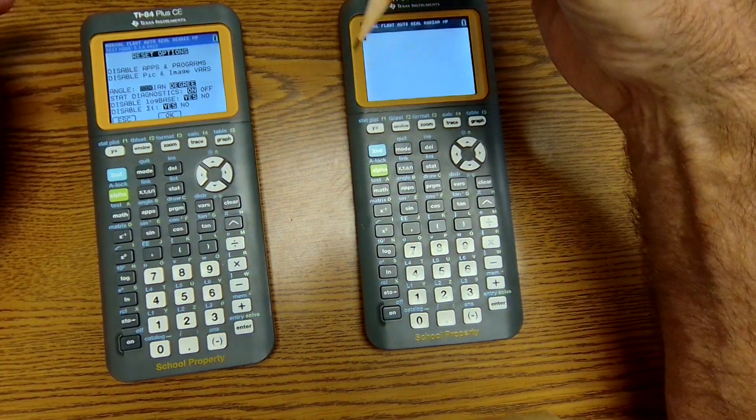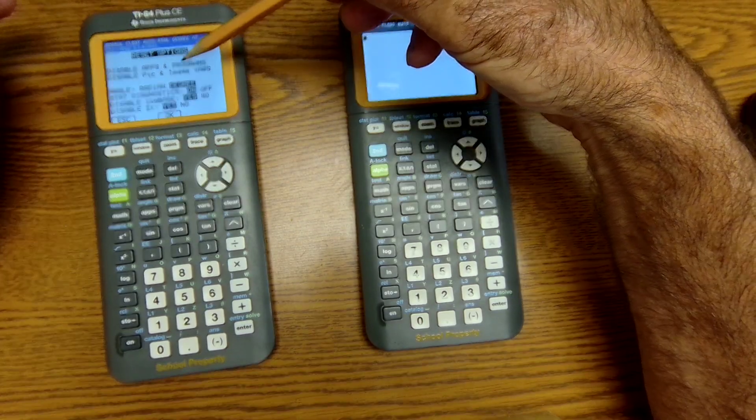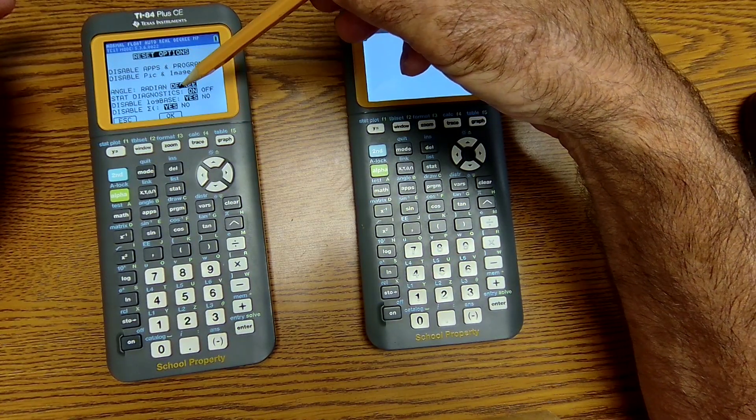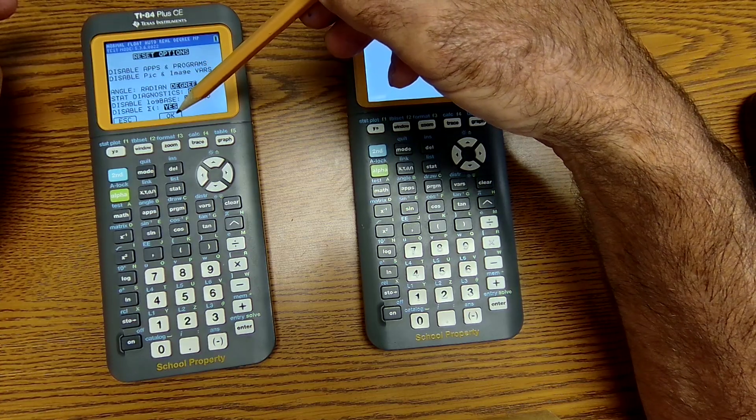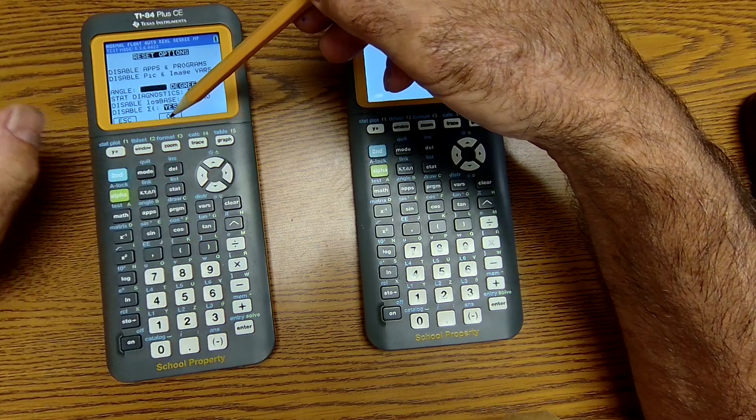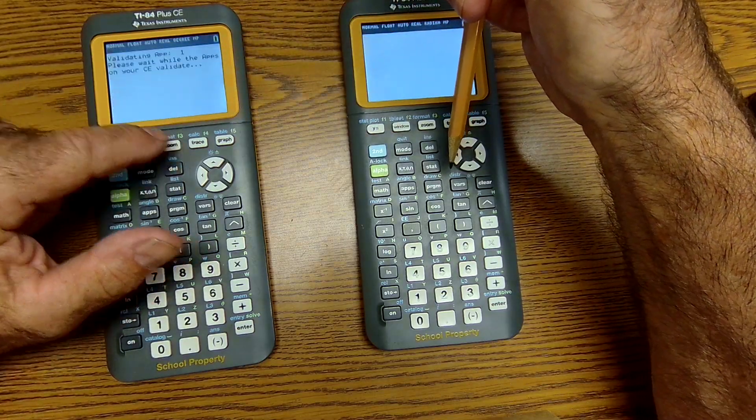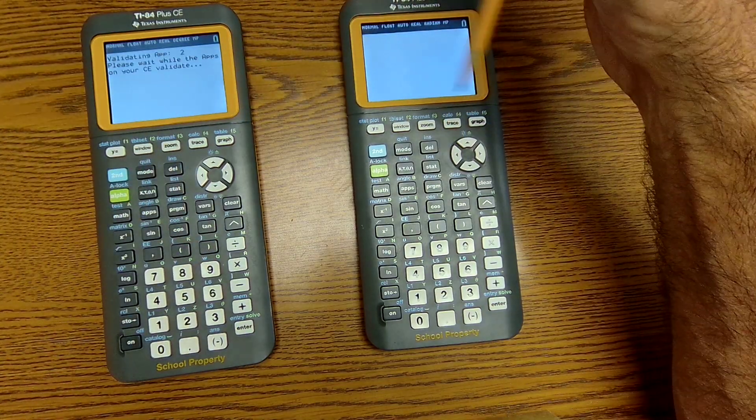And now it's asking me, what options do you want in test mode? You could select radians or degrees, diagnostics on or off, and so forth. You scroll down and select them. And then when you have them set, this is the OK button. You're going to hit Zoom. And that's going to put it into test mode.